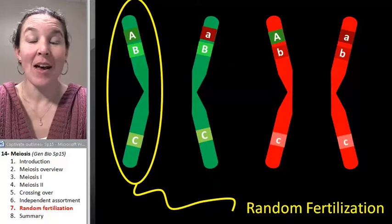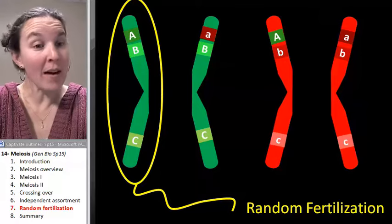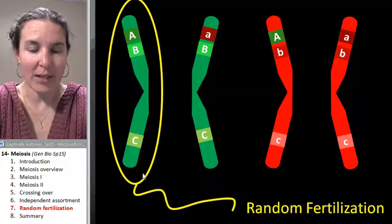So now we have crossing over that results in diversity. We have independent assortment that results in diversity.